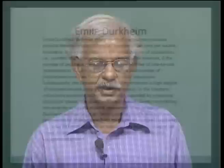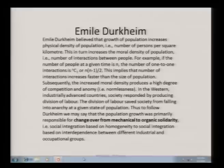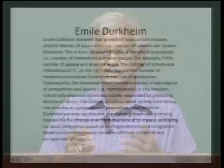For example, if the number of people at a given time is n, the number of one-to-one interactions is nC2, or n×(n−1)/2. If there are only 2 persons, there is only 1 interaction. If there are 3 persons, the number of one-to-one relationships is 3C2, or 3. If the number of persons is 4, the number of one-to-one relationships will be 4C2, or 6. This implies that the number of interactions increases much faster than the size of population. So when physical density is increasing, moral density increases much faster than physical density.